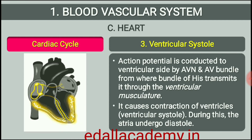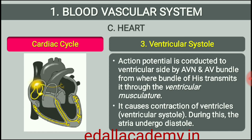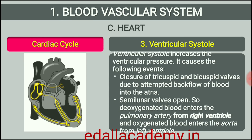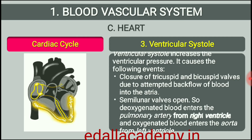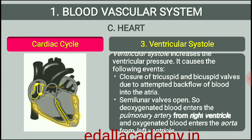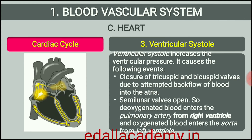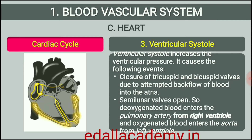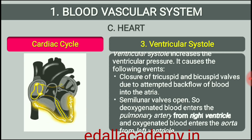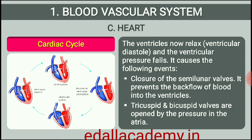The action potential is conducted to the ventricular side by the AVN and AVN bundle from where the bundle of His transmits it through the entire ventricular musculature. This causes the ventricular muscles to contract, ventricular systole, while the atria undergoes relaxation, diastole, coinciding with the ventricular systole. Ventricular systole increases the ventricular pressure causing the closure of tricuspid and bicuspid valves due to attempted backflow of blood into the atria. As the ventricular pressure increases further, the semilunar valves guarding the pulmonary artery on the right side and the aorta on the left side are forced open, allowing the blood in the ventricles to flow through these vessels into the circulatory pathways. The ventricles now relax, ventricular diastole, and the ventricular pressure falls causing the closure of semilunar valves which prevents the backflow of blood into the ventricles.